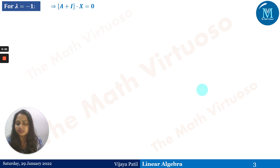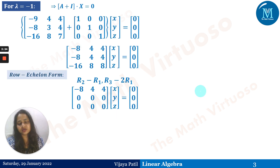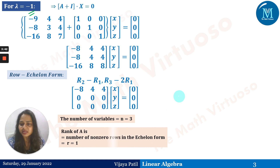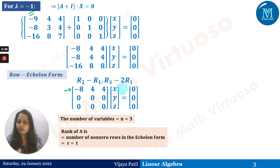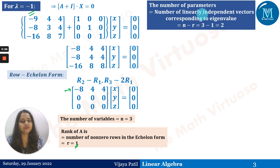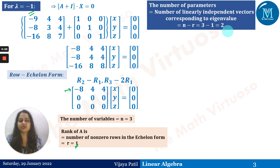Since −1 is repeated, we must use row echelon form to find the rank. Observing the matrix (A − (−1)I), we get only one non-zero row, so the rank of the matrix is 1. With the number of variables n = 3, the number of linearly independent eigenvectors corresponding to λ = −1 is n − r = 3 − 1 = 2.